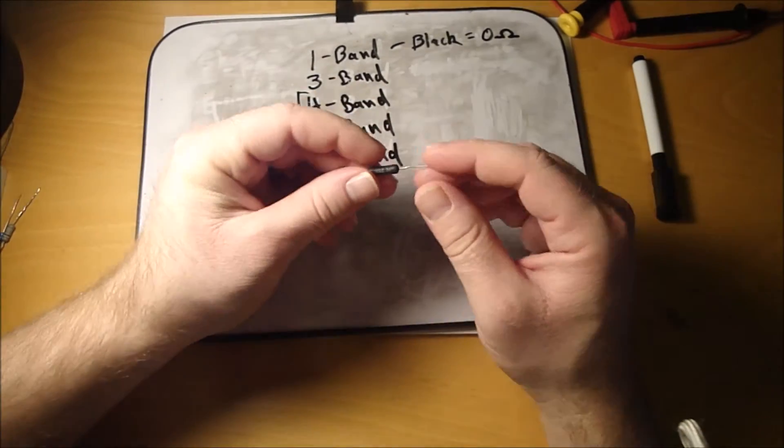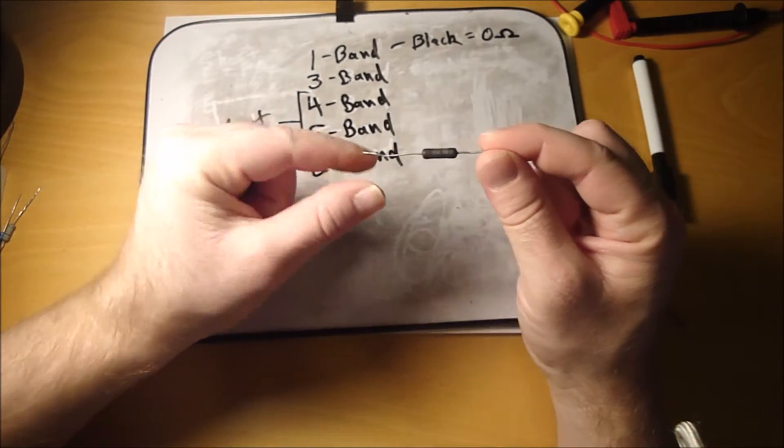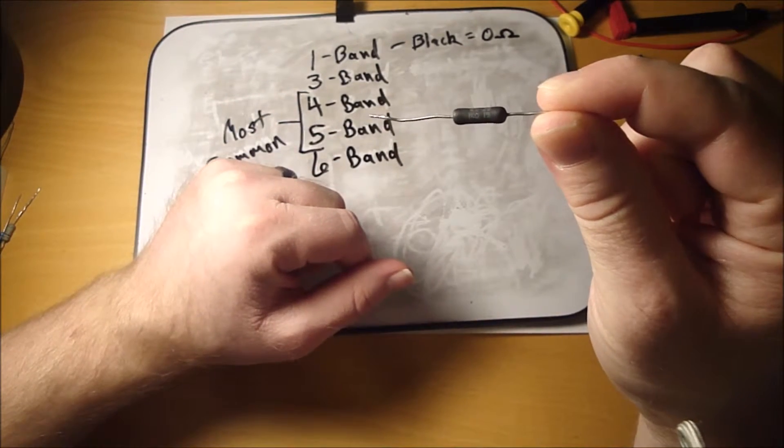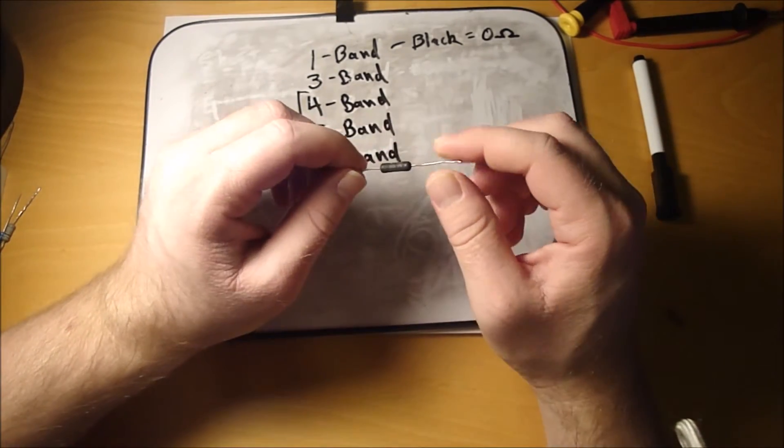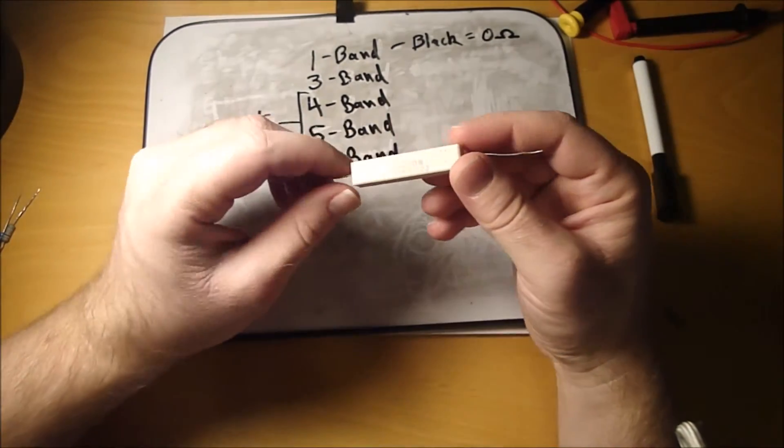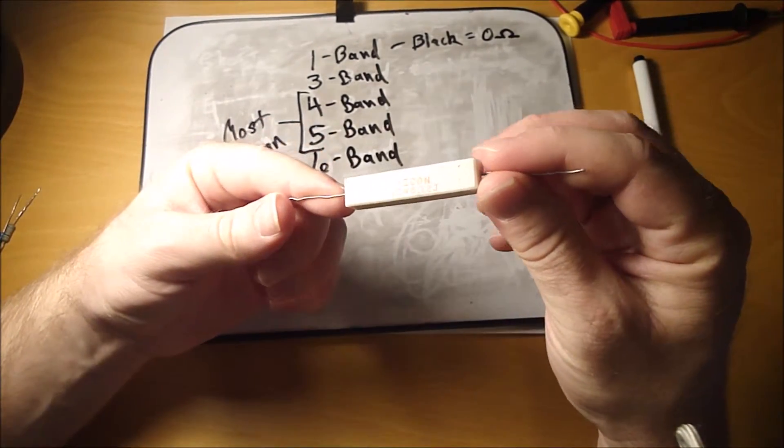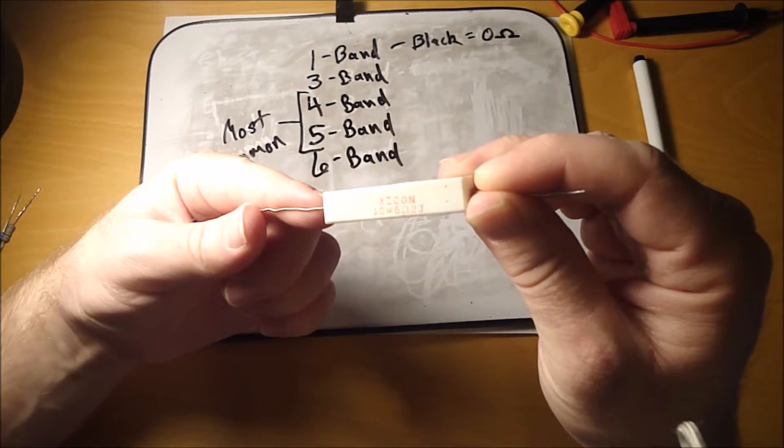Some resistors don't come with color bands. They just have the value printed on them like this one. This is a one kilo ohm resistor, and it just says one kilo ohm at 1%. So instead of having a color band, it just tells you. And then here's another one, this is a resistor that just tells you it's eight ohm, and it's a 10 watt resistor.